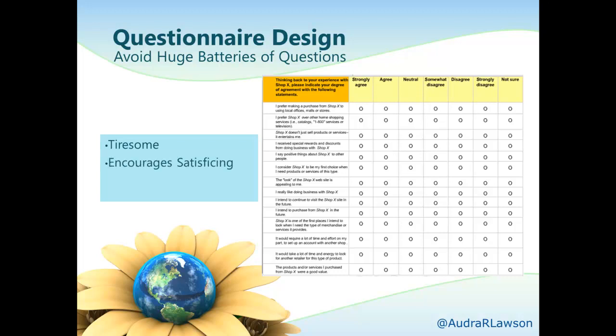Second, long batteries encourage satisficing behaviors, where folks just fill in responses to complete the survey. Satisficing theory suggests respondents tend to assume the main option is probably correct, so the easiest response is simply to agree — a passive way to respond that makes them less likely to actually think about the questions, hurting validity and reliability. Third, there can be anchoring effects, where your answer to the first question influences all subsequent answers because people like consistency and will often stick with their initial response.